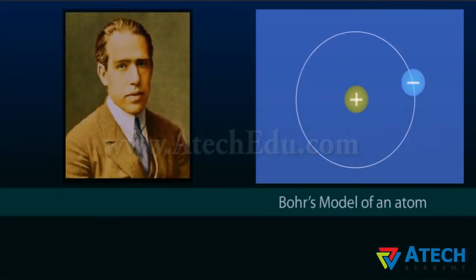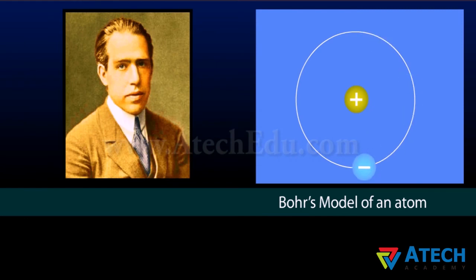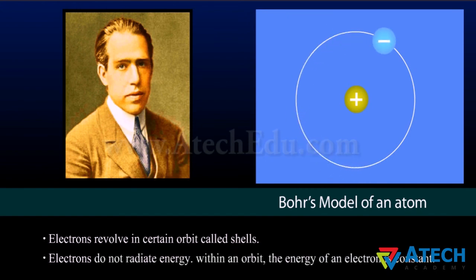Keeping the shortcomings of Rutherford's model in mind, Niels Bohr gave certain findings of the model of an atom. According to him, the electrons revolve around the nucleus in certain orbits called shells. Each shell or orbit has a different radius.